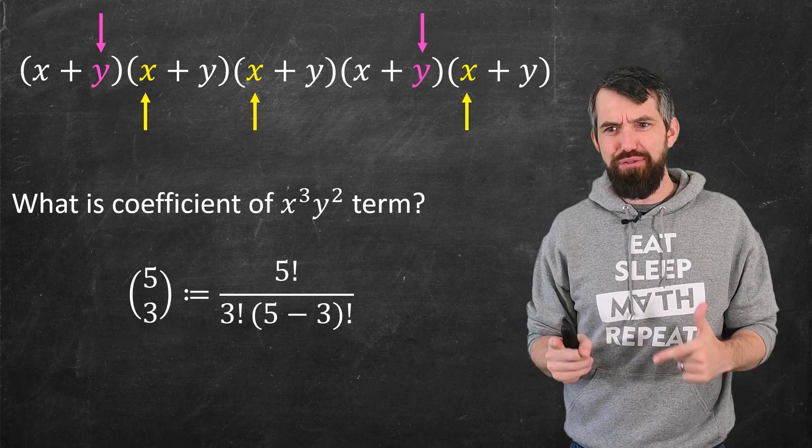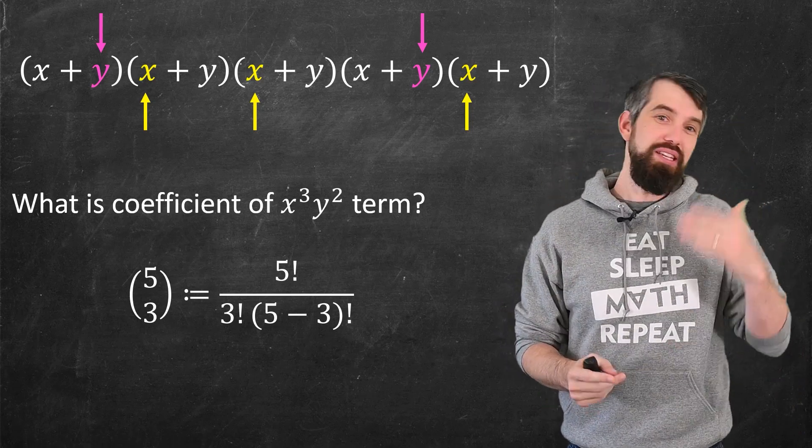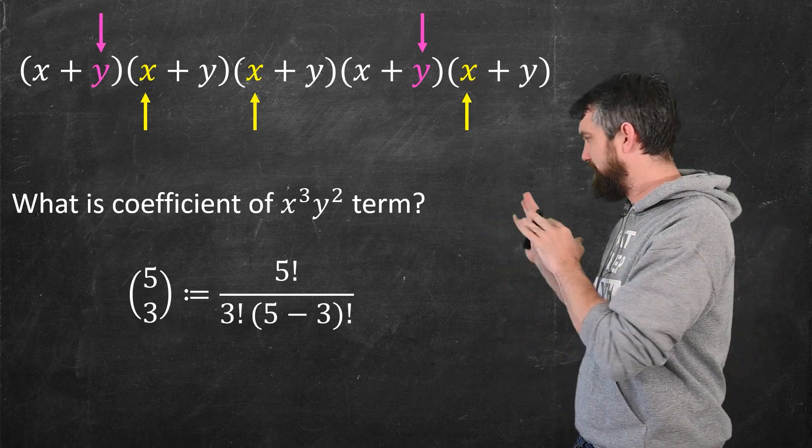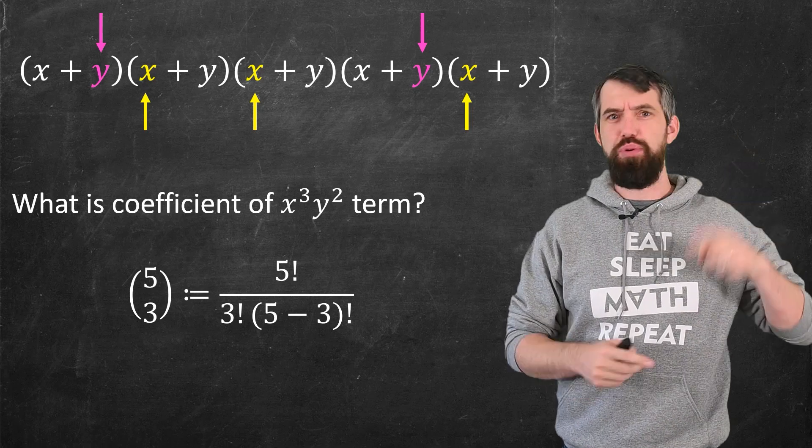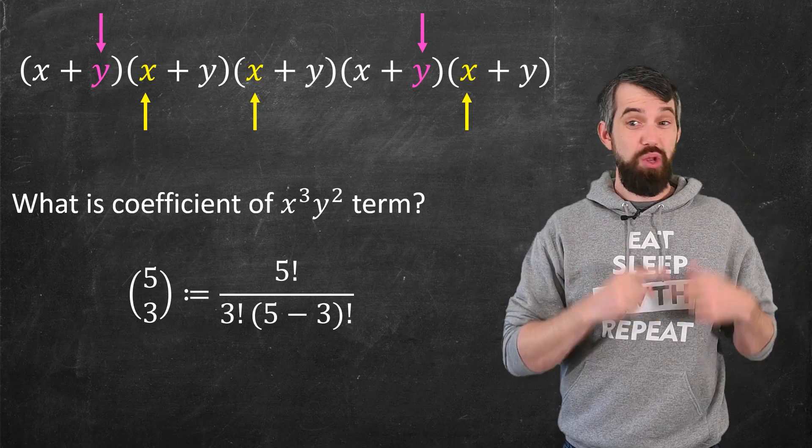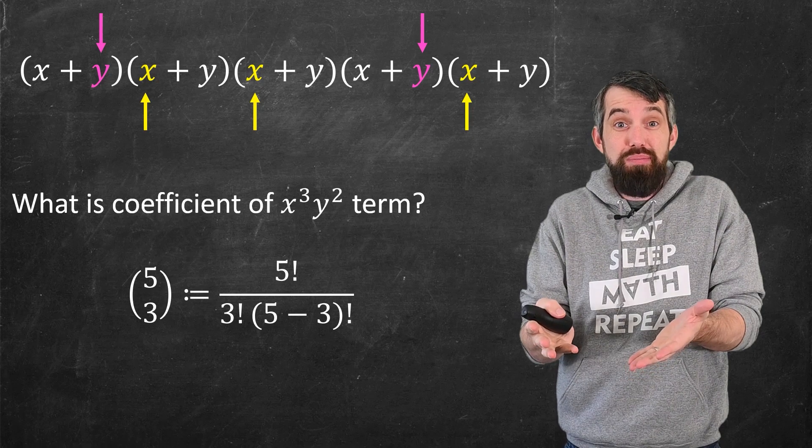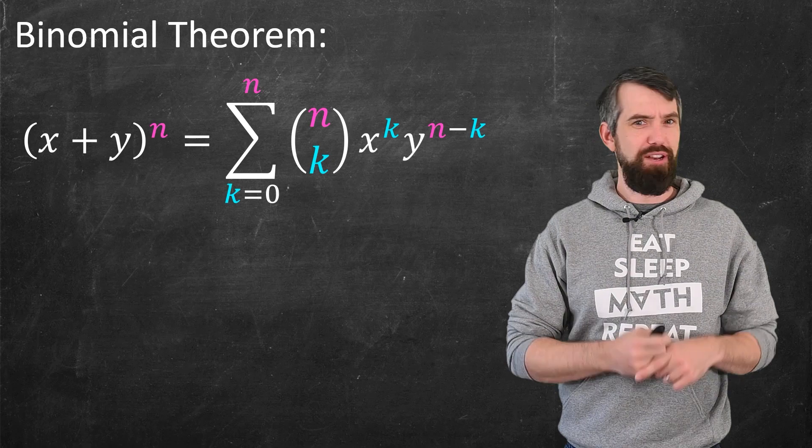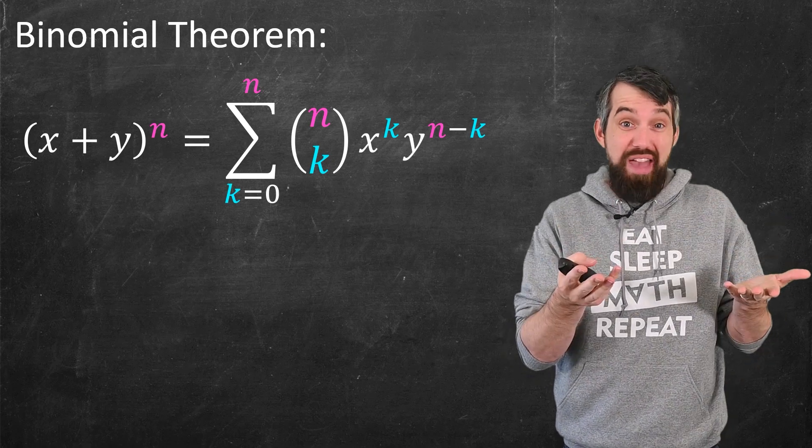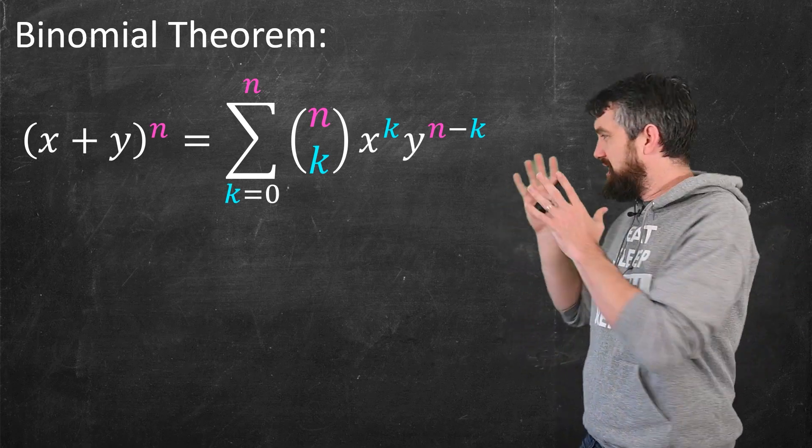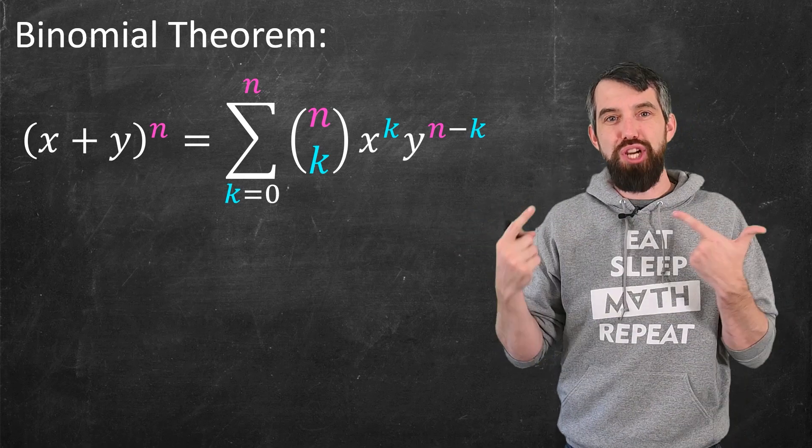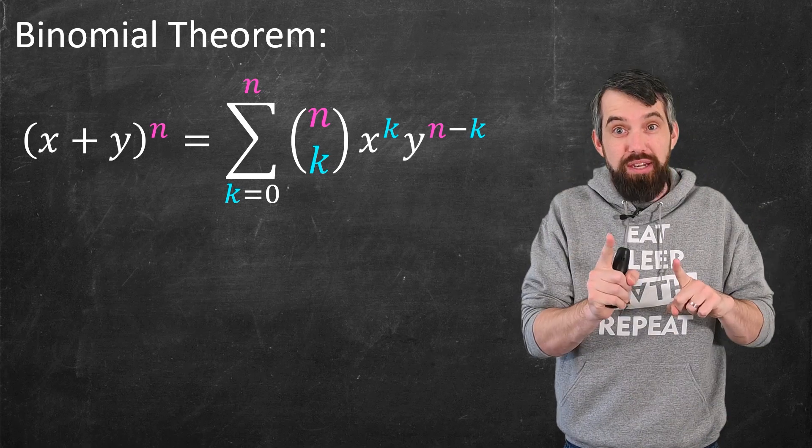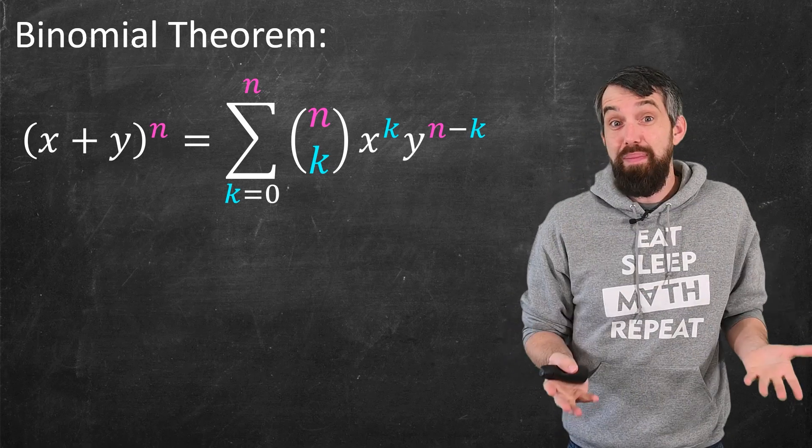So the symbology we use for this coefficient is 5 choose 3, and it's defined to be 5 factorial over 3 factorial times 5 minus 3 factorial. If you're unsure about this formula and this notation, I'll put up a link to a previous video I've done introducing that entire idea. So here we have the coefficient of one of these terms, and now we can figure out what everything is going to be. This is the binomial theorem, and it says that if you take x plus y to the power of n, n just some positive integer, then it's just a sum of all the possible terms that can look like x to some power and y to some power, with the coefficient always being n choose k.